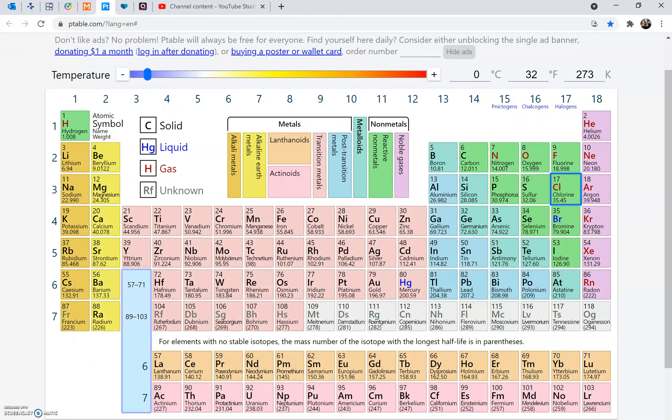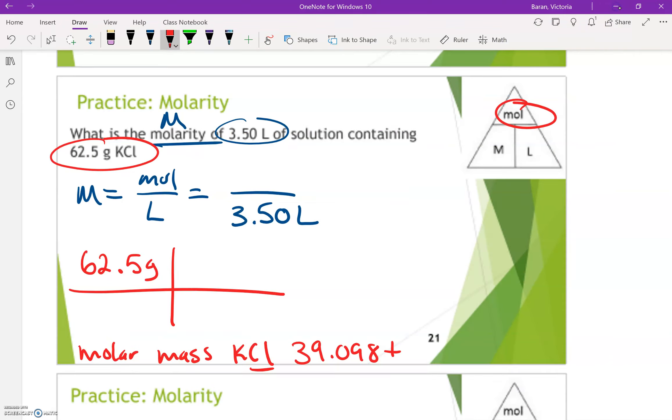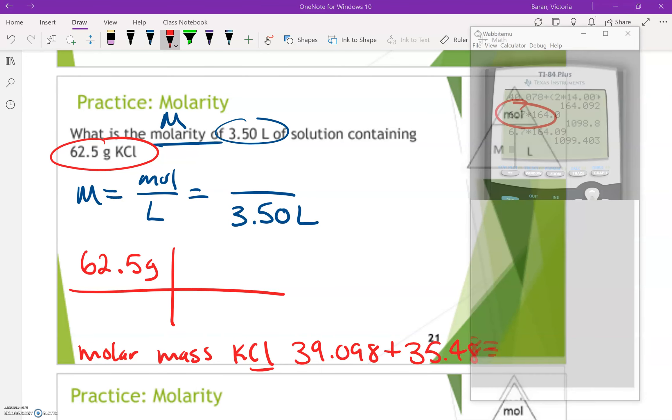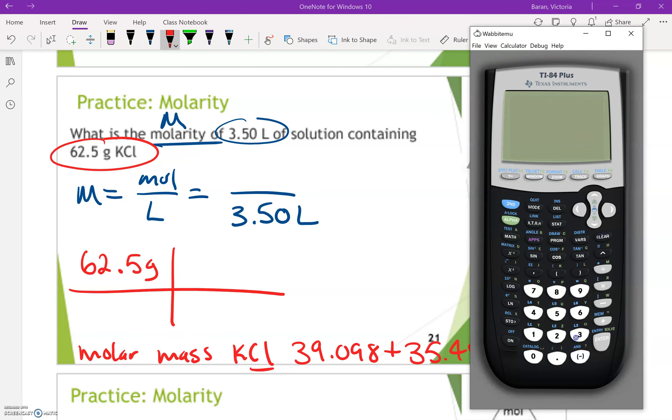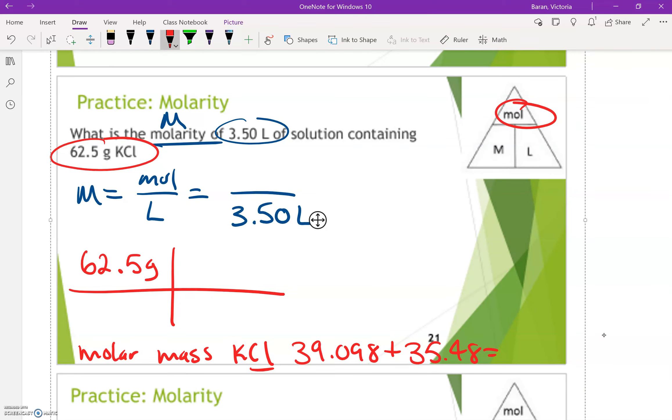Which is 35.45. So I'm going to go ahead and add those together. So we are going to do 39.098 plus 35.45. We have one of each element. So 74.548 grams per mole, right?